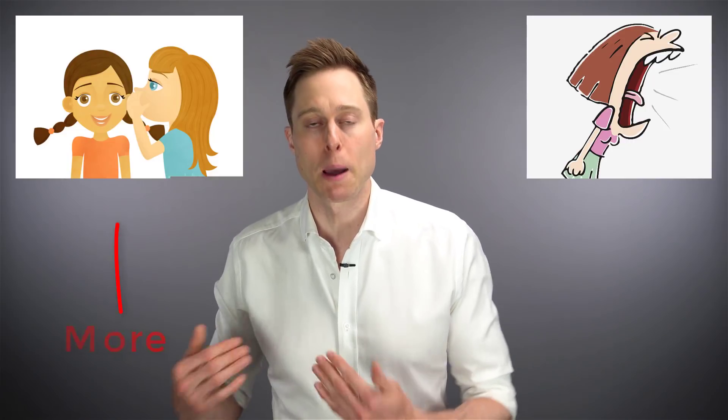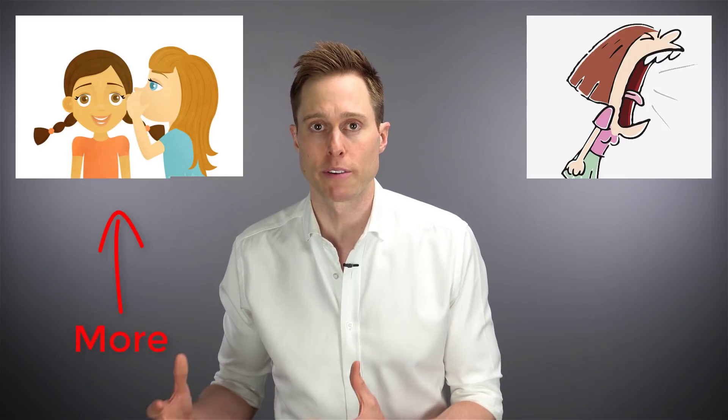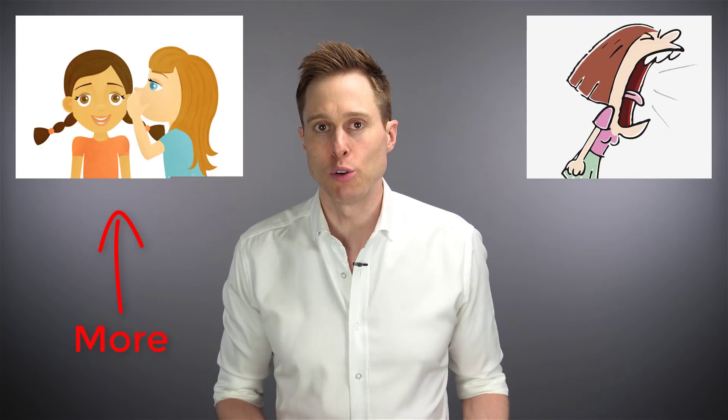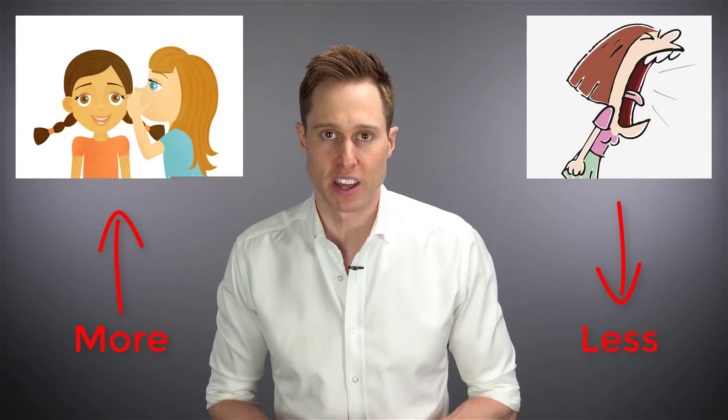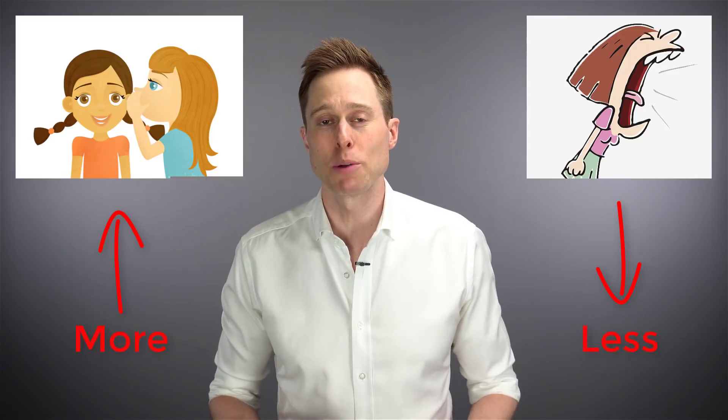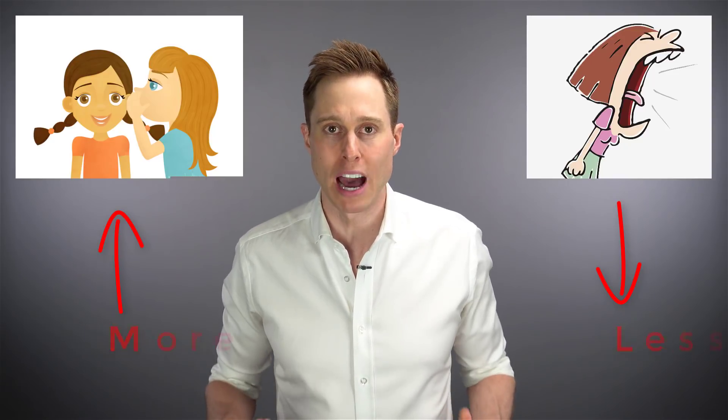Think of it like this. If you have an individual who's speaking softly to you and an individual who's yelling at you, you need to provide a different level of amplification to each one of those individuals. For the soft-spoken individual, you need to apply more amplification to their voice so you can audibly hear them. For the individual who's yelling at you, you need to provide significantly less amount of amplification to them.